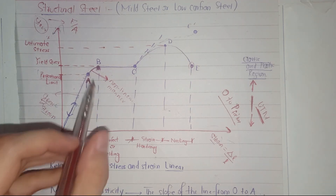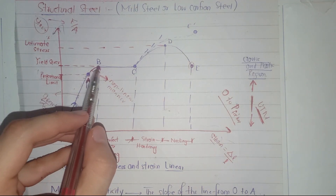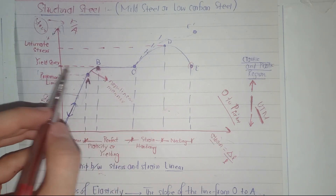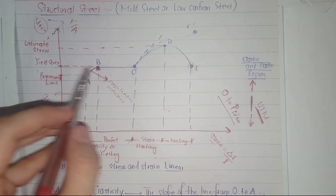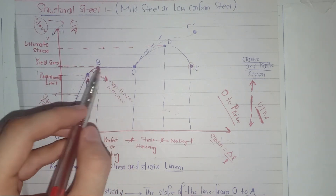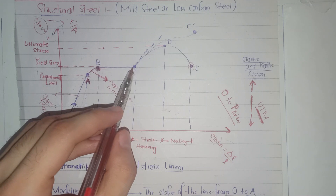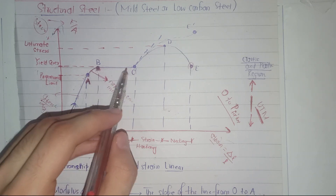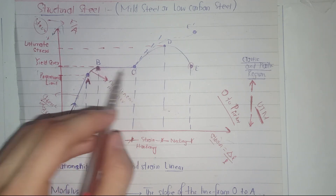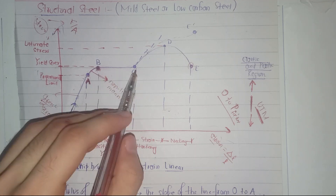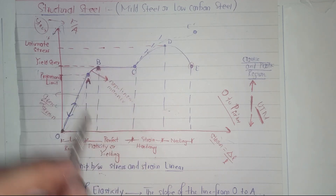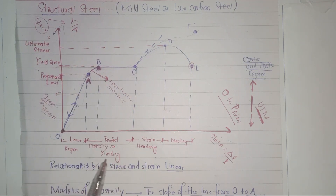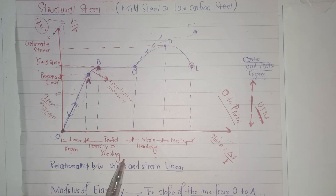After point B, we can see that under constant stress there are large permanent strains. There is no change in stress, but there is a large change in deformation occurring. This region is called perfect plasticity or yielding — that is, the yielding region.